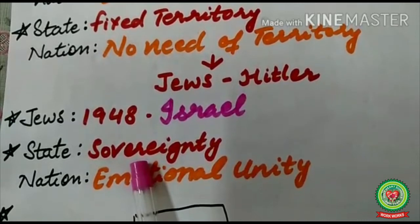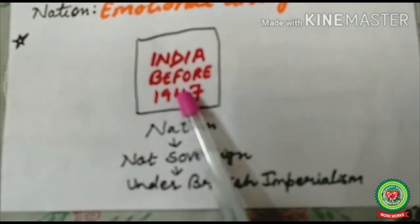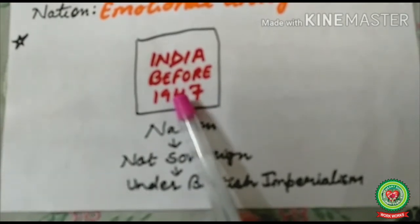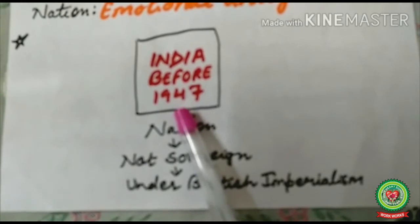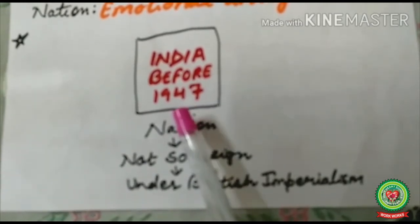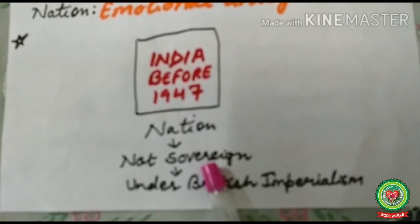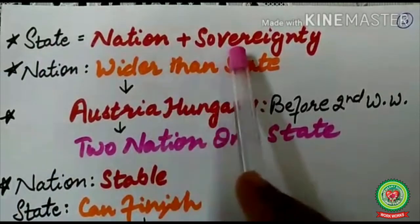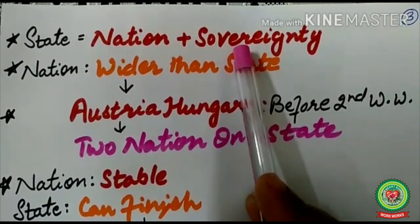Sovereignty is essential for a state, but it is not essential for a nation to possess sovereignty. The basic requirement of a nation is a strong bond of emotional unity. For example, before 1947, India was just a nation and not a state. Mahatma Gandhi launched many national-level movements, and people had a bond for the nation, but the government was British. India was not sovereign — it was not a state, just a nation. So, state equals nation plus sovereignty. After 1947, India became a state because it got sovereignty after the end of British imperial rule.